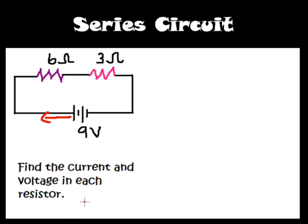It says find the current and the voltage in each resistor. So the first step in solving for your current and voltage is to actually get the effective or total resistance and that's easy. That's simply by adding up your resistors. So our resistance is 9 ohms.